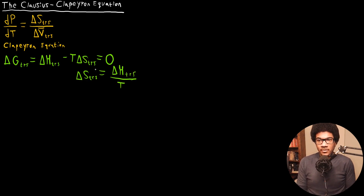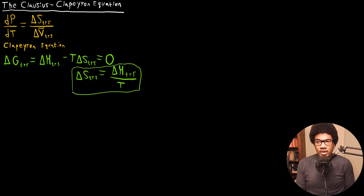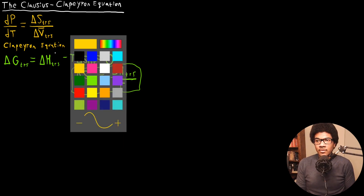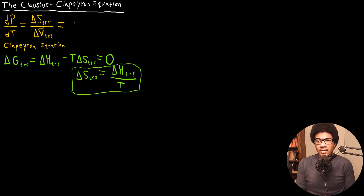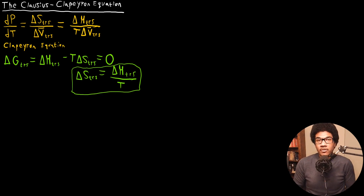You bring that term over — the negatives cancel out — and you divide by the temperature. So what we can do is use this to re-express the Clapeyron equation in terms of enthalpy. Making that substitution means we can also express the Clapeyron equation as dp/dT = delta H of the transition over T·delta V of the transition. This re-expresses the Clapeyron equation in terms of the enthalpy of whatever transition you're interested in.